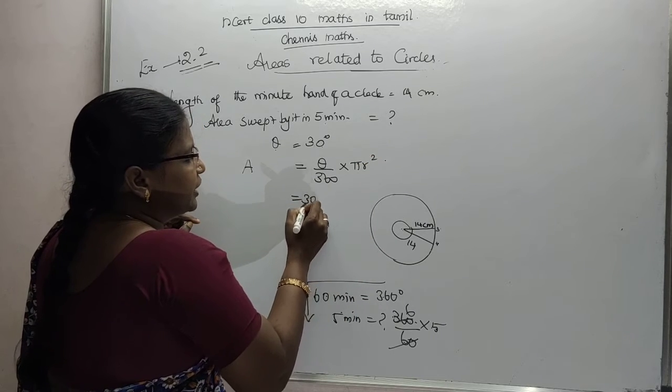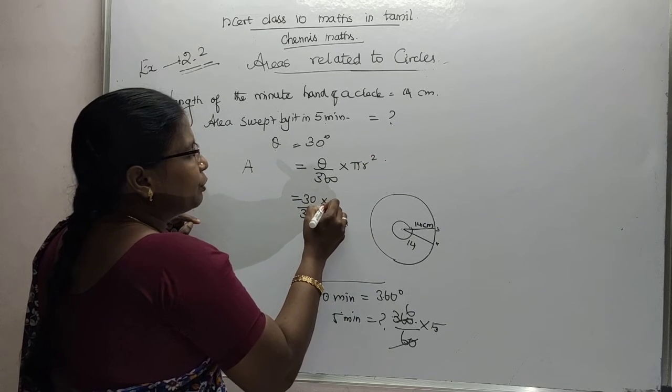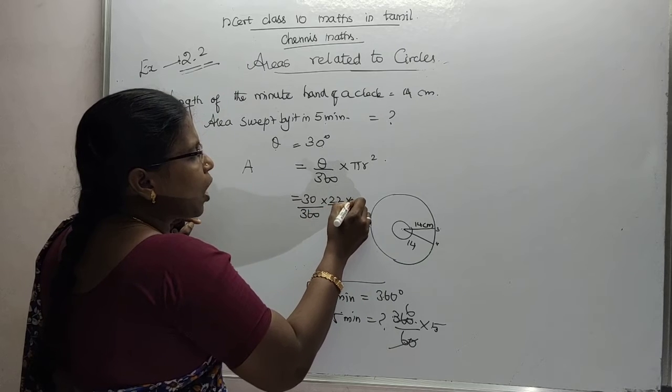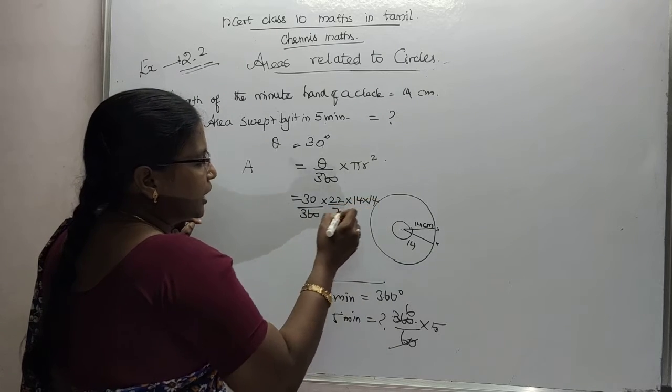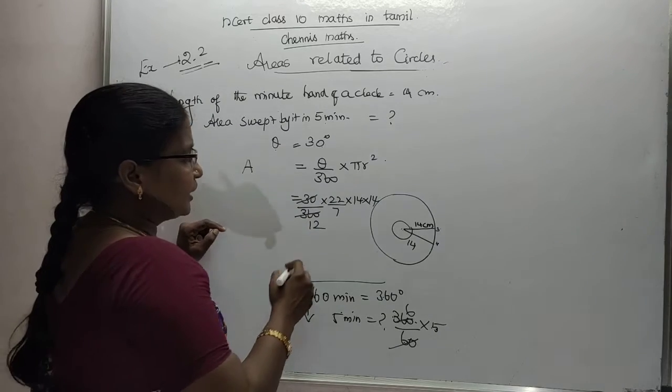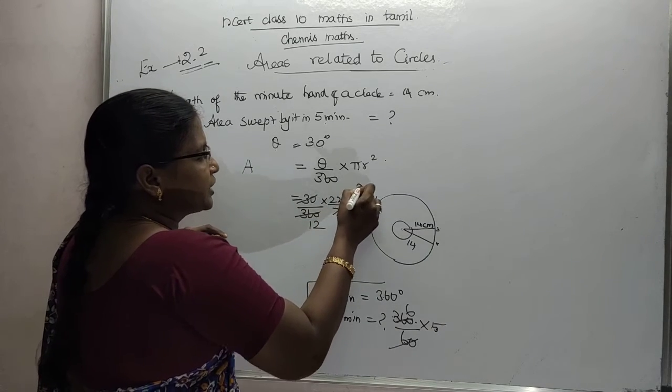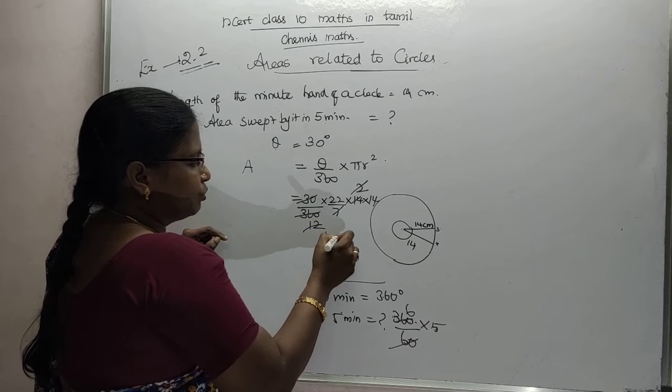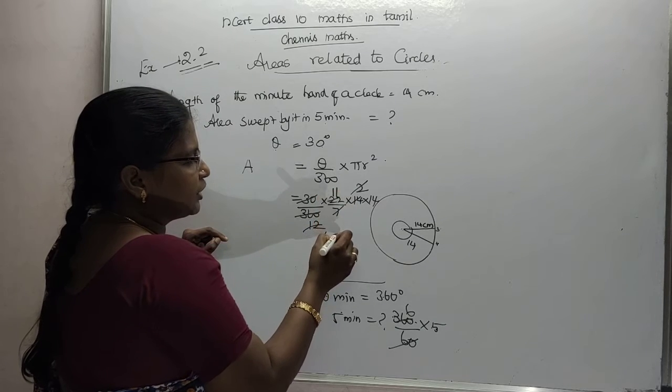Theta is 30 degrees by 360 into pi 22 by 7 into r, 14 into 14. Now this should cancel: 1, 2, 12 times. Next this should cancel 2 times, this can cancel 6 times, this 3 times, this 11 times.